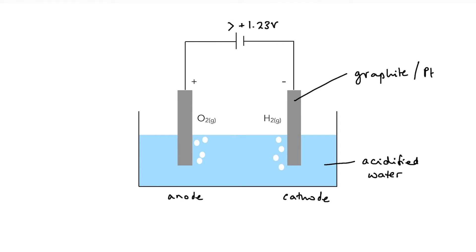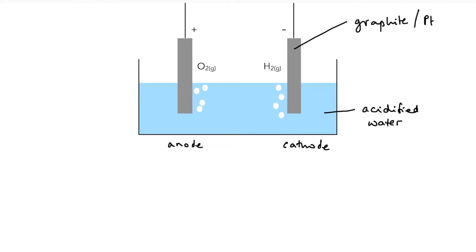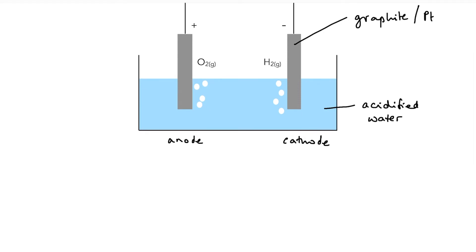If I link up my two electrodes via a battery that's providing more than plus 1.23 volts, then two reactions are going to happen. At the anode, water is going to be oxidized. So we have oxidation reactions happening at the anode. So water is going to lose electrons forming hydrogen ions, which will remain in solution, oxygen gas, which is bubbled off, and four electrons.